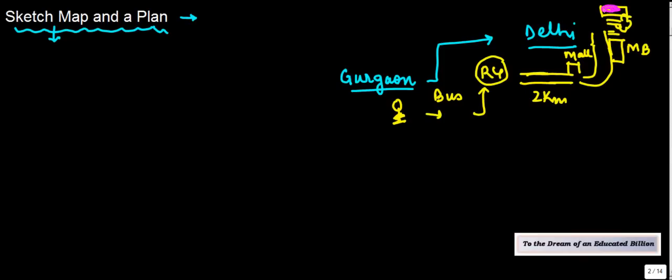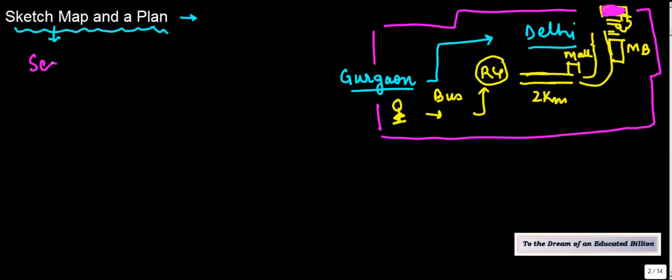So what this guy is doing is he's actually drawing on paper the details of how you should reach his place. Now this may not be actually to scale. What is a scale? A scale means an exact replication. So he's kind of roughly drawn a figure of where he wants you to go.